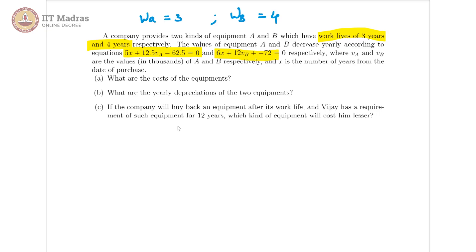What are the costs of the equipment? So the cost of the equipments would be the VA and VB values when x is equal to 0. That is, when you just bought it, what is the value of the equipment?